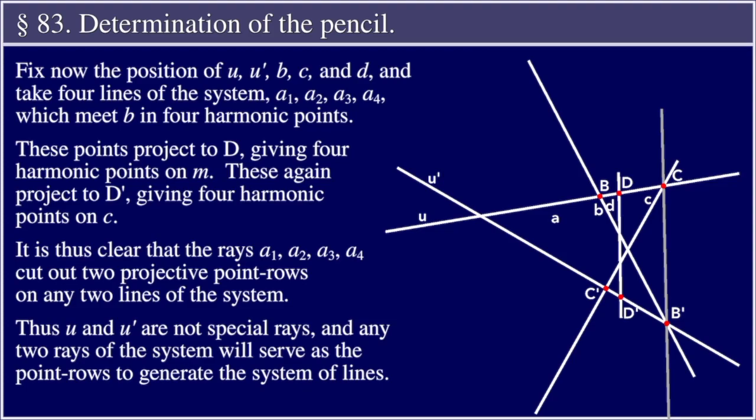Fix now the position of u, u', b, c, and d, and take four lines of the system A1, A2, A3, A4, which meet b in four harmonic points. These points project to D, giving four harmonic points on m. These again project to D', giving four harmonic points on c.